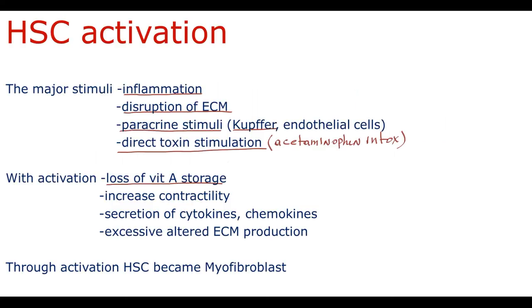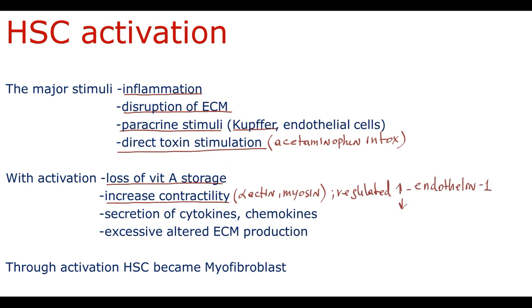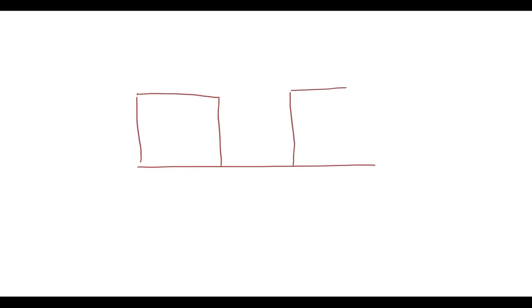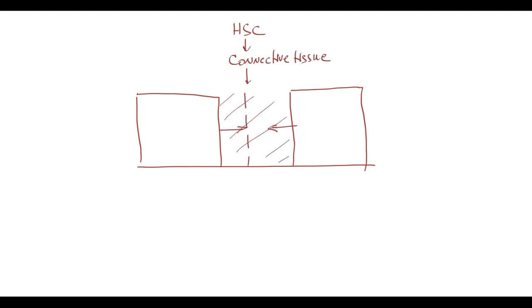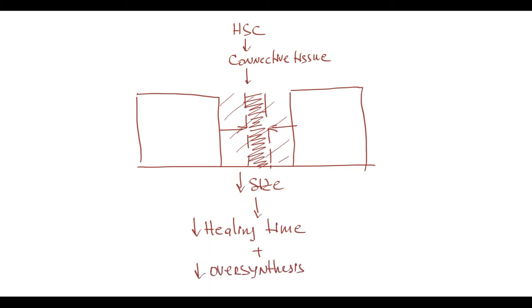The second feature is that with activation there is an increase in hepatic stellate cell contractility, caused by increased expression of smooth muscle-specific proteins alpha-actin and myosin. The contractility of hepatic stellate cells is regulated primarily by two mediators: endothelin-1 that stimulates contractility, and nitric oxide that decreases contractility. The logic is that when hepatocytes die, a tissue defect is created which must be repaired by hepatic stellate cell connective tissue secretion. The smaller the defect, the less extracellular matrix and time is needed, so by contraction hepatic stellate cells decrease the size of the defect, decreasing healing time and oversynthesis of extracellular matrix.